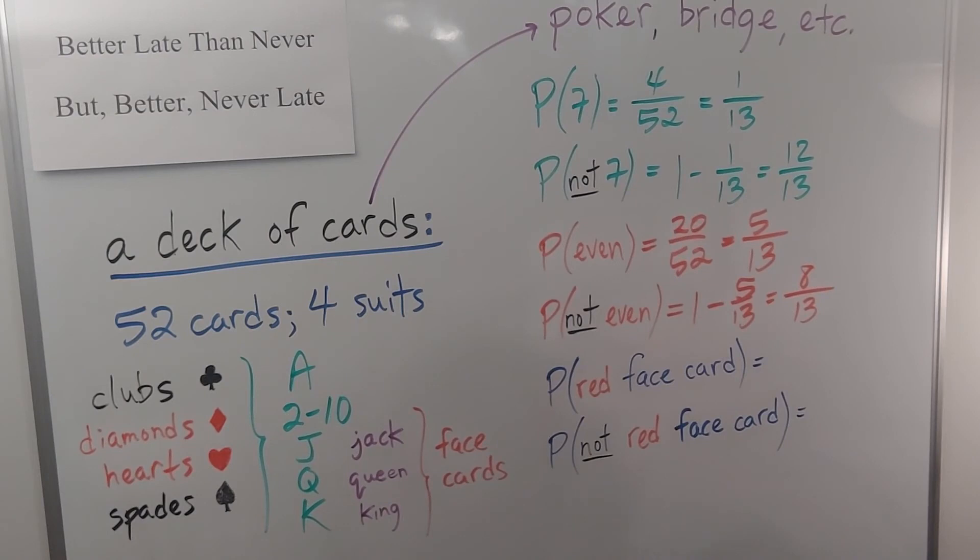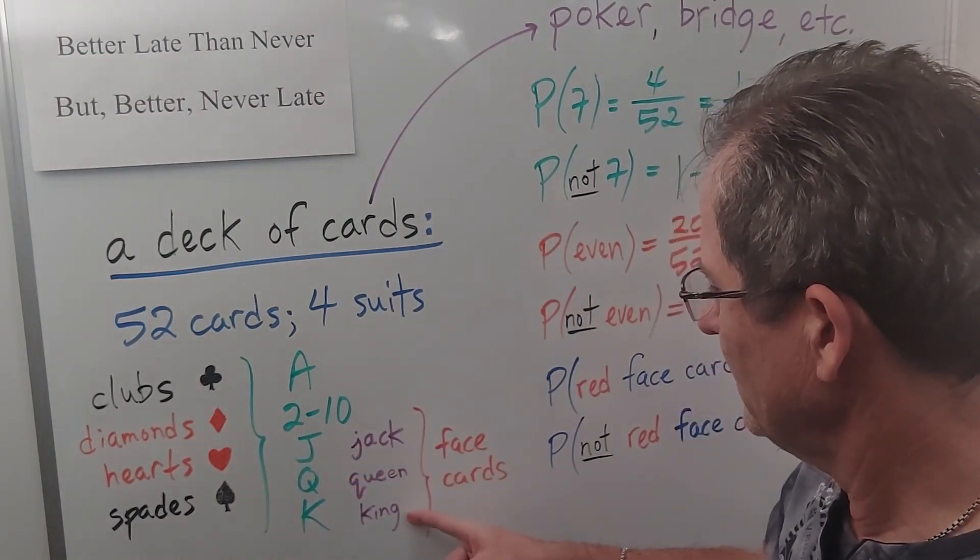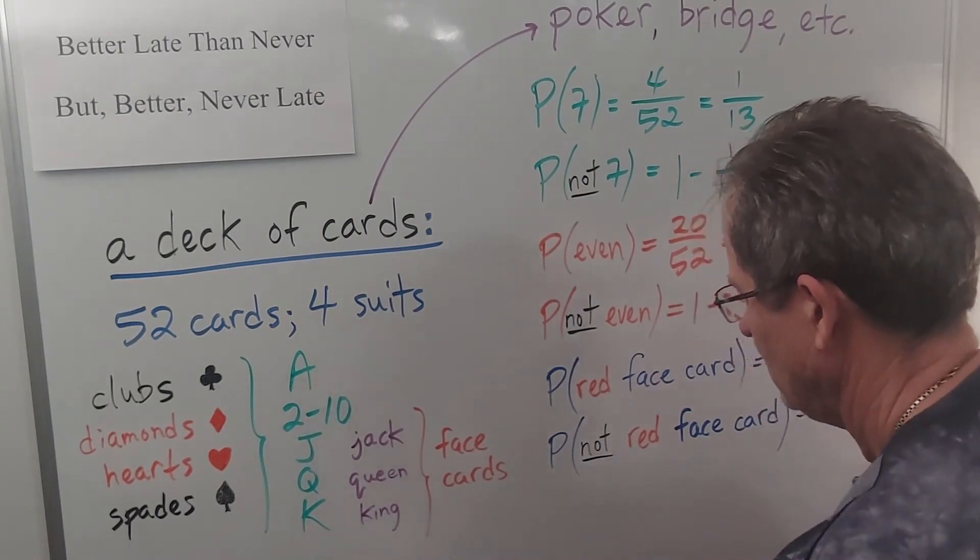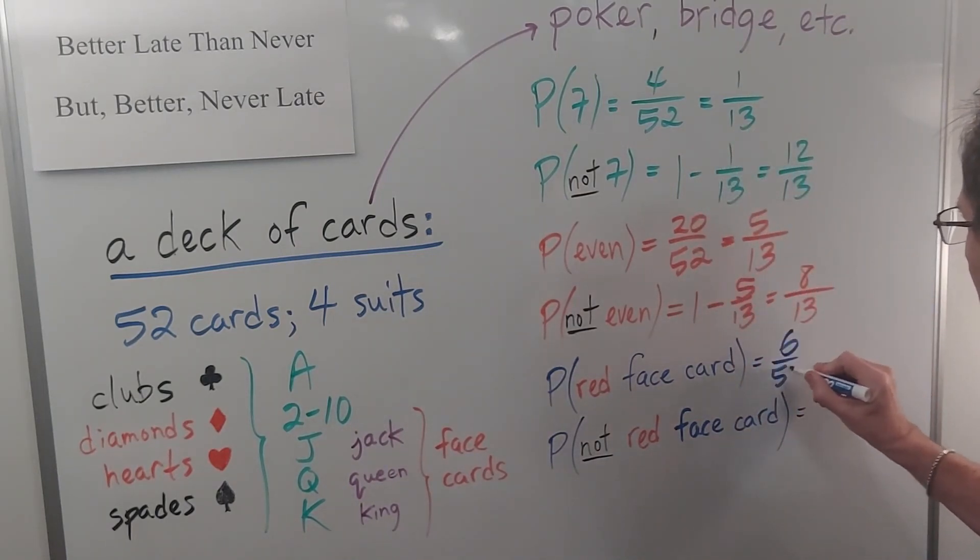The probability of getting a red face card. Well there's two red suits. There's three face cards in each suit. That's six out of fifty two. Divide by, in this case, three. So you get two out of, fifty two divided by three. What's that, fourteen? No. Sorry, ten, four. Okay, not three. Three doesn't go into fifty two. What am I saying? Just divide by two. Three out of twenty-six. Duh.